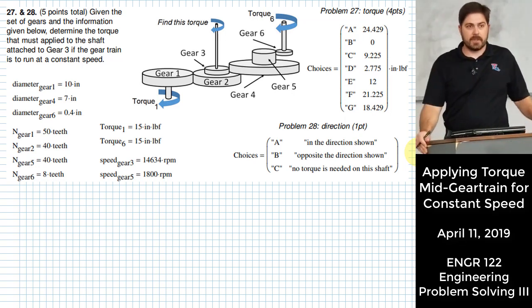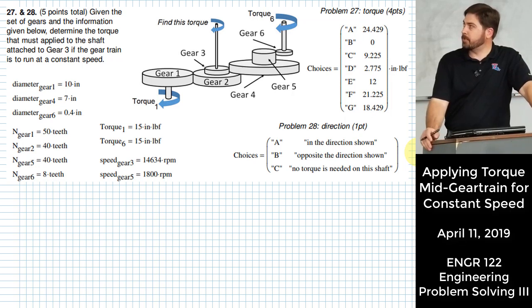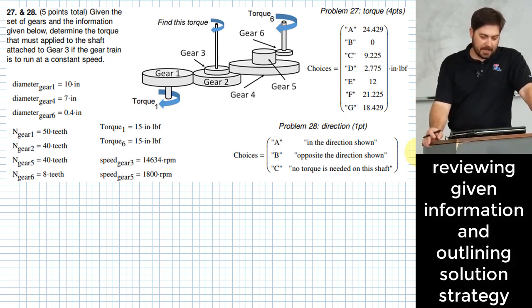Alright, so here's a problem where we have two torques that are put into a gear train that has several stages to it. And what you are supposed to find for this problem is how much torque you would have to apply on that middle shaft in order to make the whole thing be in equilibrium.